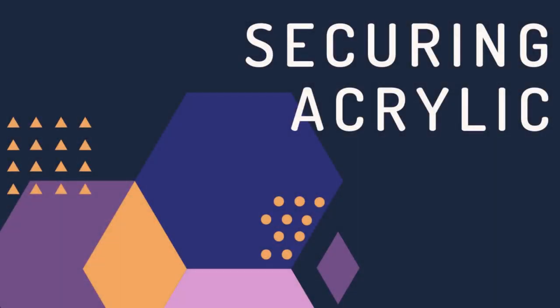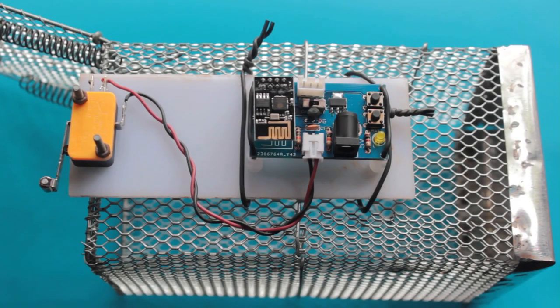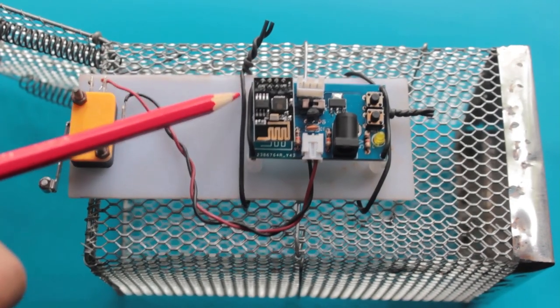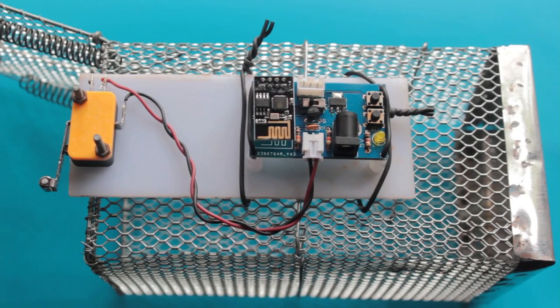Once we are happy with the placement, we can attach the acrylic piece to the mouse trap. I am using two pieces of wire and twisting them to hold the acrylic piece with the mouse trap. Notice that the door of the trap is open, and the door will close immediately. Do this step very carefully.